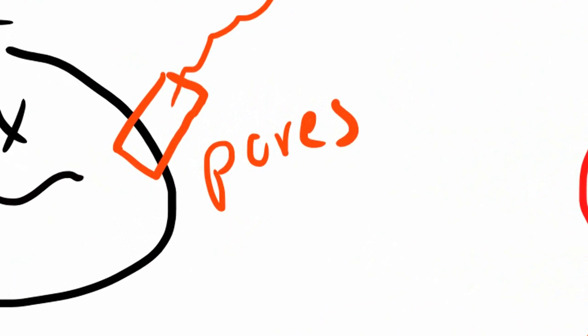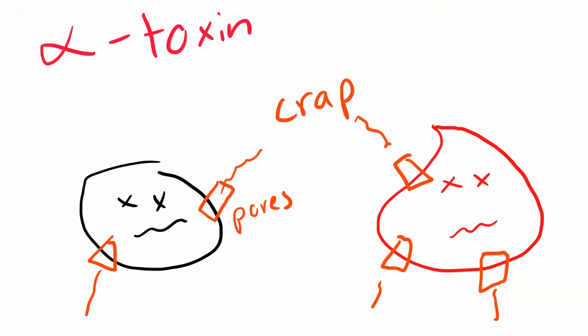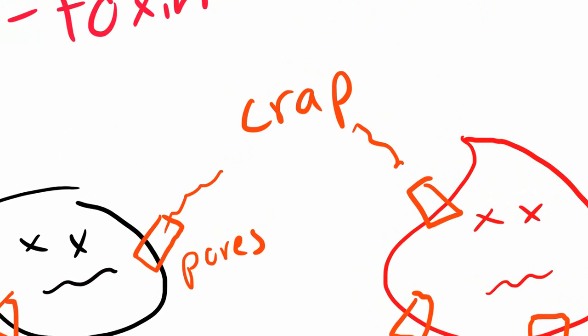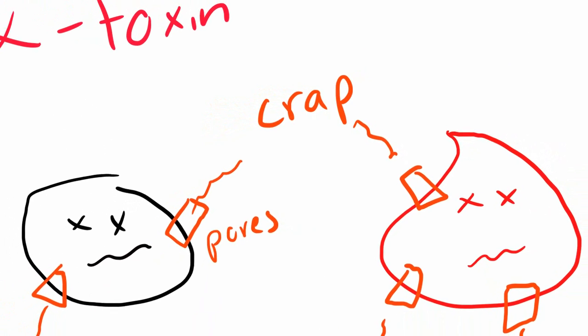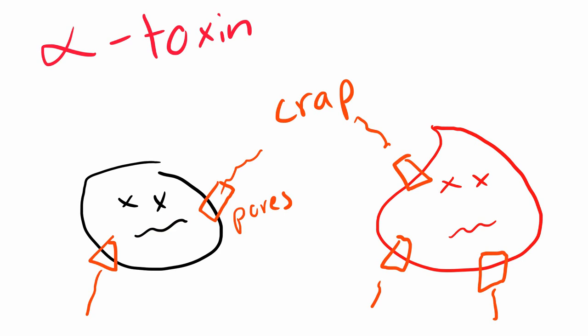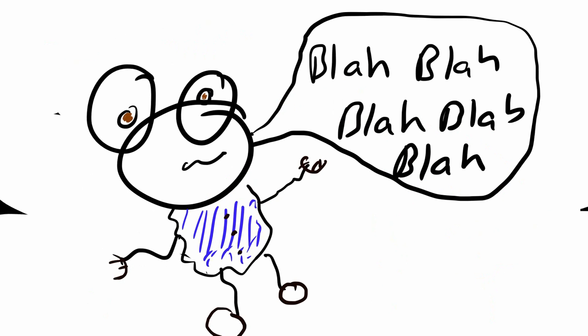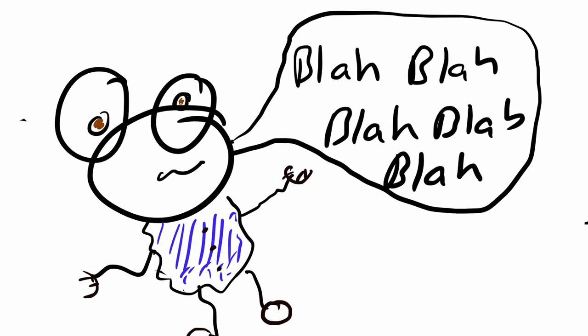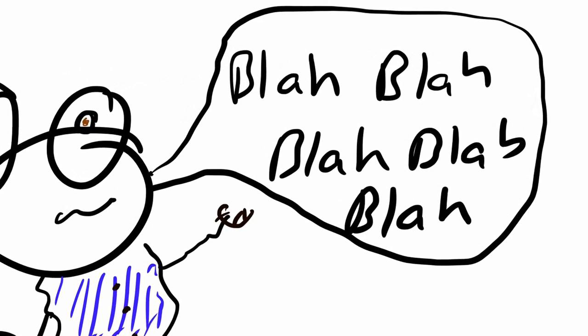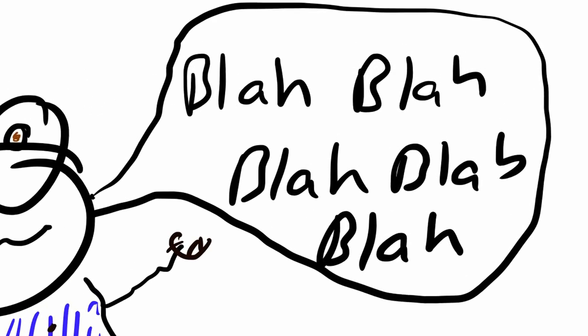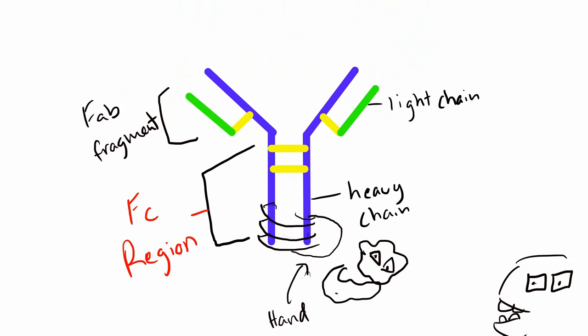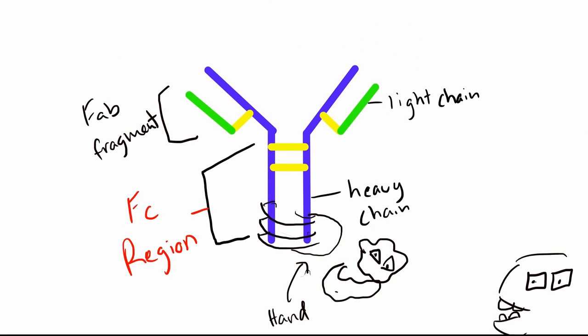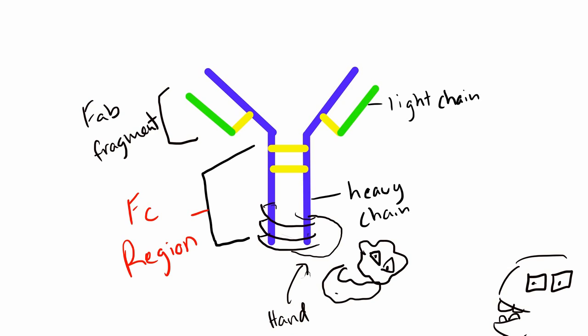Another virulence factor is alpha toxin, which forms pores inside the cells. Since it's forming pores, all its contents are going to leak out and the cells can die. It affects red blood cells, platelets, and a whole bunch of cells. It also has thrombokinase, which helps in making the vegetations. And it has teichoic acid, which binds onto the fibronectin of damaged cells and clots. Oh yeah, I forgot protein A, which binds to the Fc portion of IgG and prevents phagocytosis.